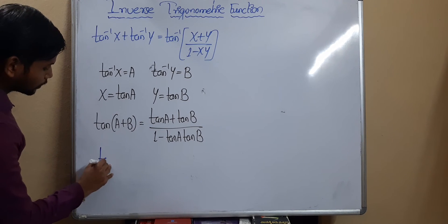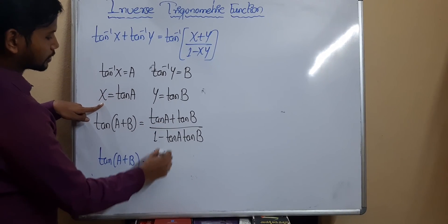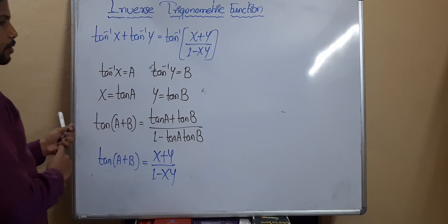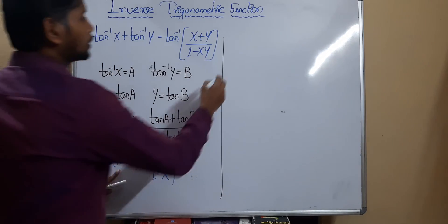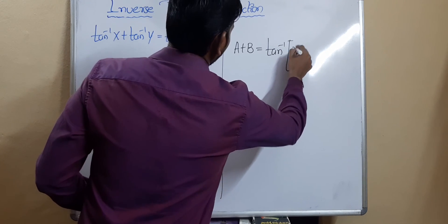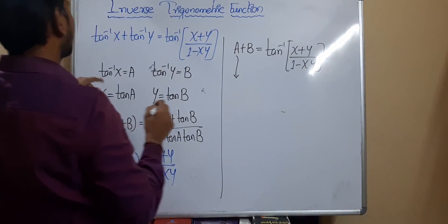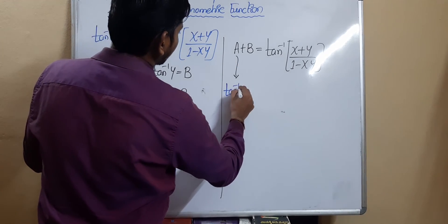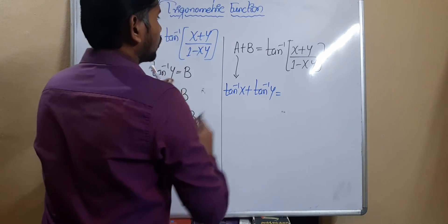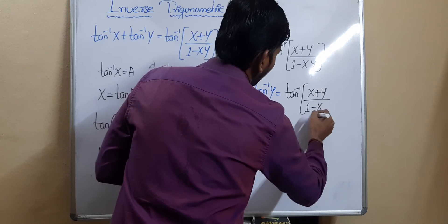We need to substitute the values: tan(a + b) = (tan a + tan b) / (1 − tan a·tan b) = (x + y) / (1 − xy). Taking tan inverse on the right-hand side, a + b = tan⁻¹((x + y) / (1 − xy)). Substituting back, tan⁻¹(x) + tan⁻¹(y) = tan⁻¹((x + y) / (1 − xy)).